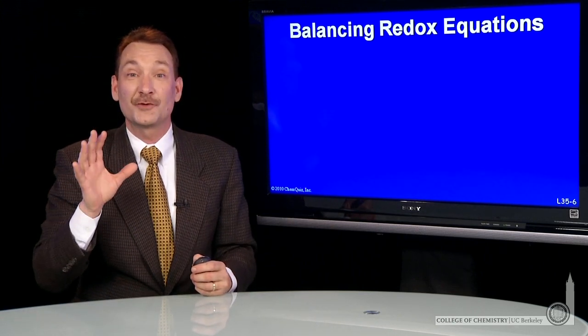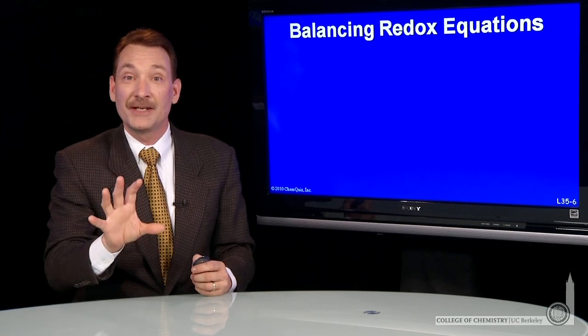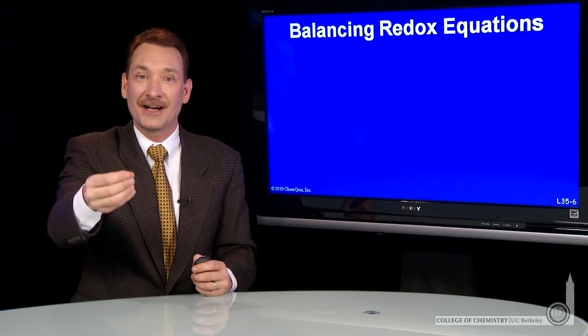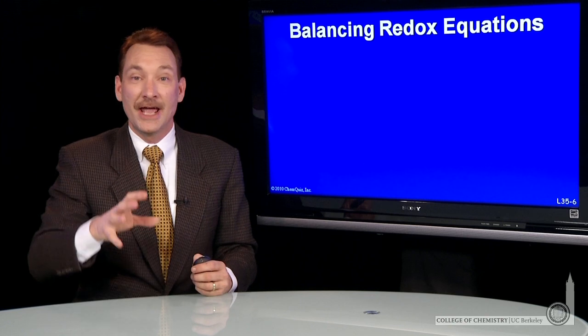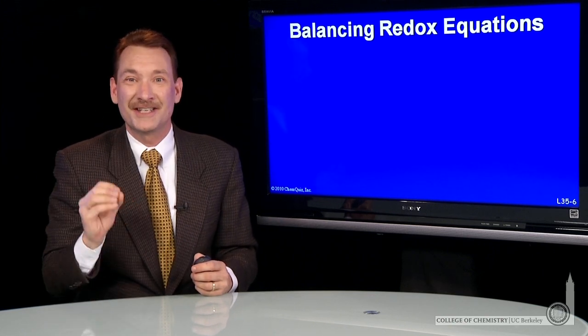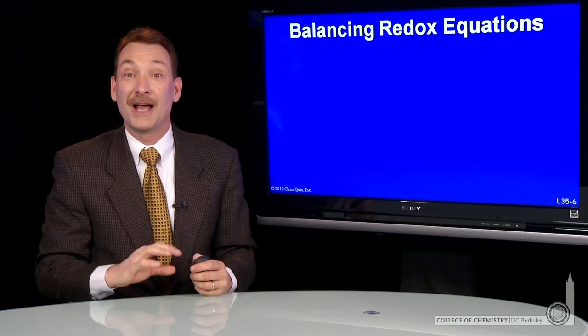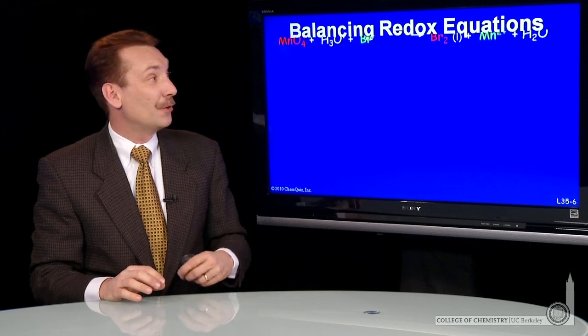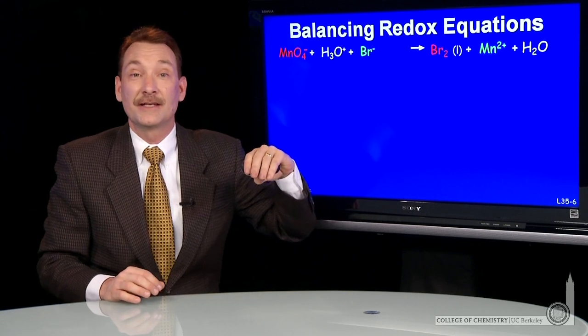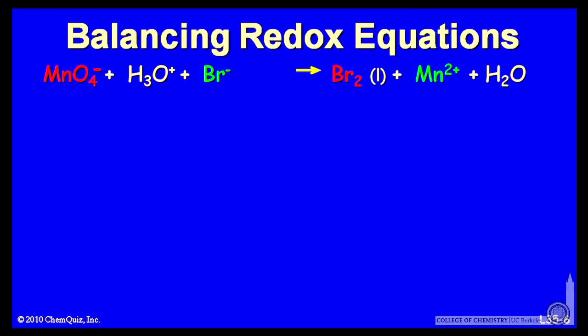So let's look at a redox reaction and break it up into half cells and determine the oxidation and reduction pairs and use our tables of standard reduction potentials to help us balance that reaction. So here's just an unbalanced chemical reaction, the permanganate ion and the bromide ion reacting to form the liquid bromine and the manganese ion in solution.